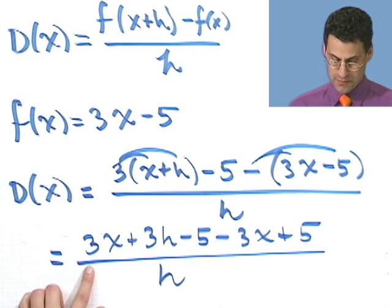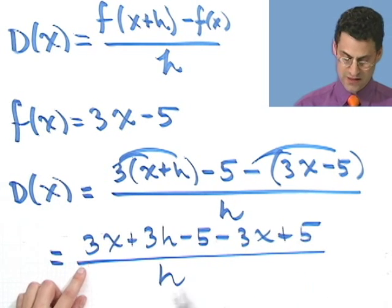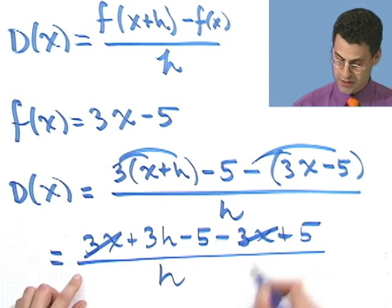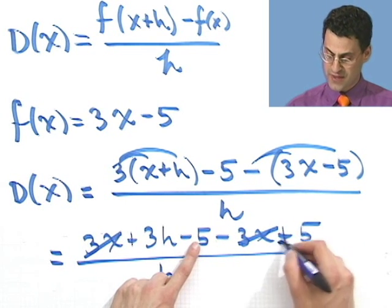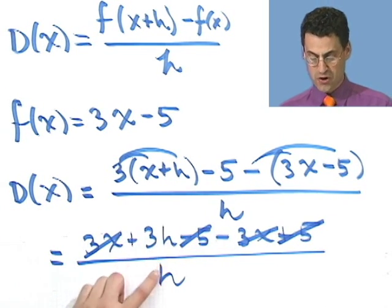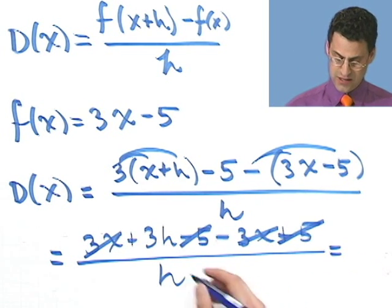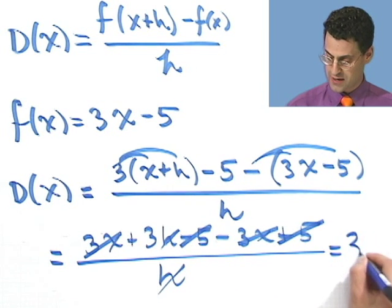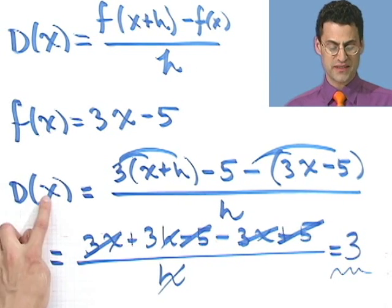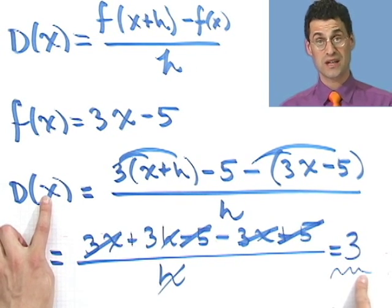And that can be reduced because I have a 3x and a negative 3x, so they cancel. And then I have a minus 5 and a plus 5—they cancel. And look what I have: 3h over h. And as long as I promise h isn't 0, I could cancel those too, and I'm left with just 3. So the difference quotient is really easy—it's just 3 in that case.